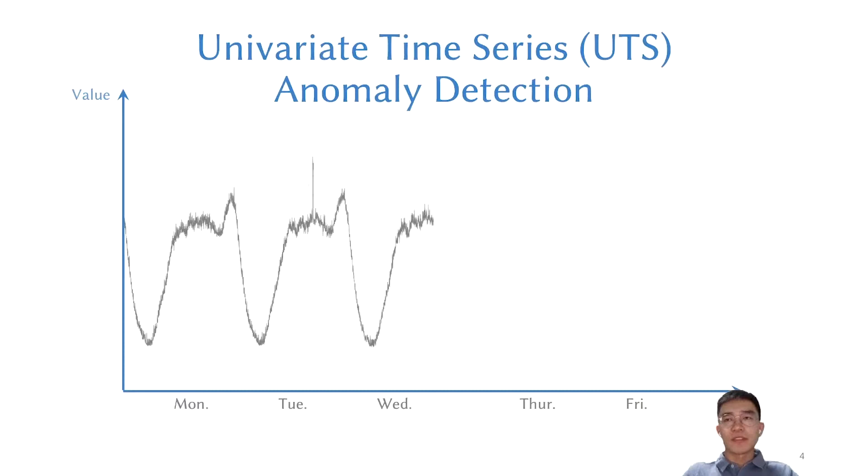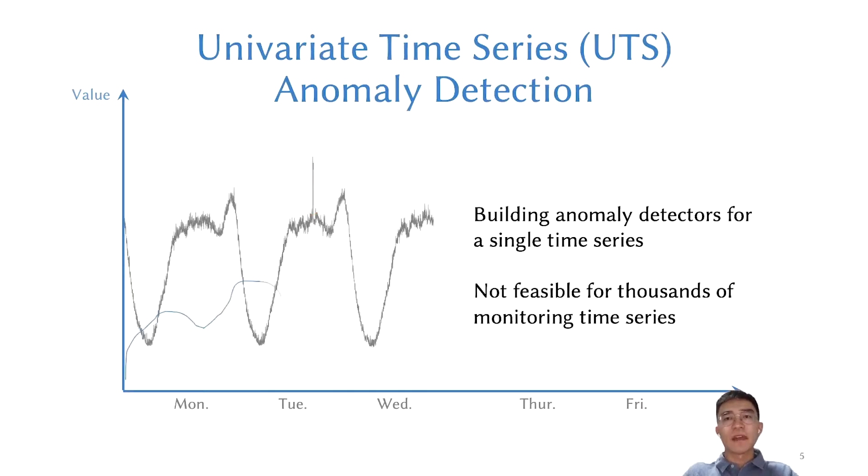To closely monitor the quality of service, online service providers continuously collect the monitoring data of each performance metric, such as CPU utilization, average response time, etc. Traditionally, operators build anomaly detectors for univariate time series (UTS).